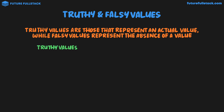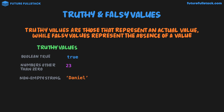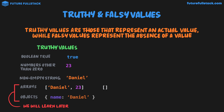Let's look at the truthy values first. We have boolean true. We have numbers other than zero, like 23. We have a non-empty string, like the string "Daniel." Arrays are also truthy values — and can also include an empty array. Objects are also truthy values, and an empty object is also a truthy value. Don't worry about arrays and objects right now; we will be learning them in much more detail later on.